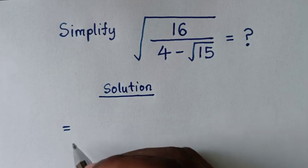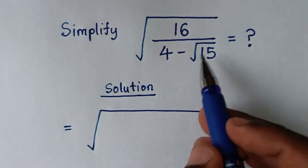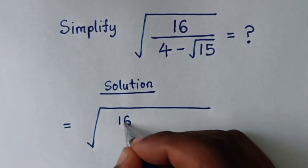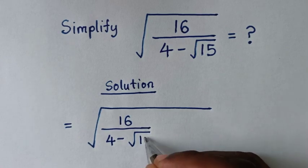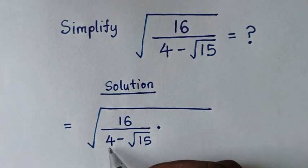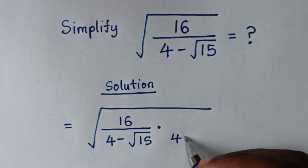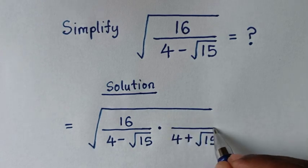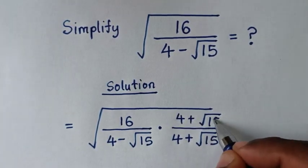It will be equal to square root of 16 over 4 minus square root of 15. From here we will rationalize the denominator. To rationalize the denominator, we will multiply in the denominator by 4 plus square root of 15, and in the numerator we will multiply by the same, 4 plus square root of 15.